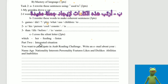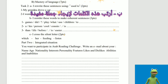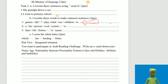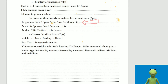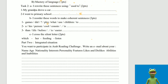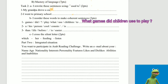B: I reorder these words to make coherent sentences. One: games, did, play, what, children, use, to? The answer: What games did children use to play?